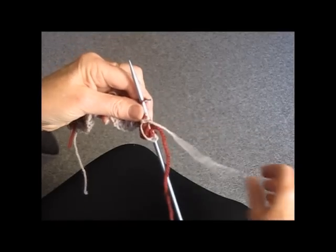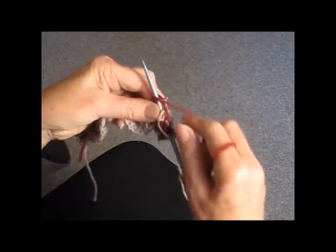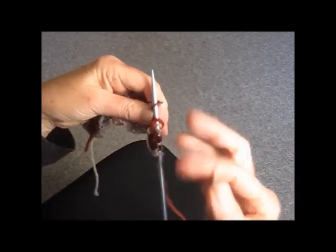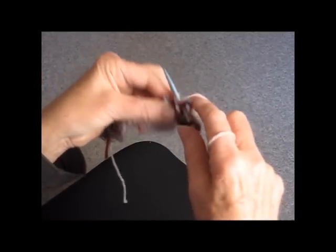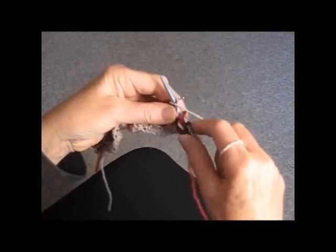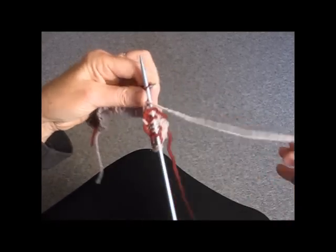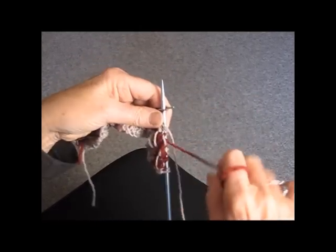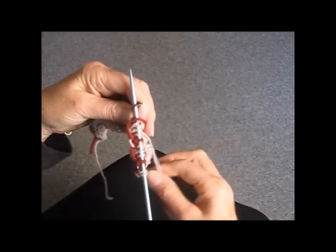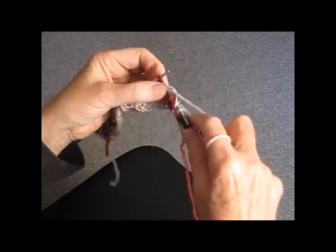And then again, one, the middle red stitch, and then three of the tan: one, two, three. And one more red, and then three tan all the way across to the end of the row.